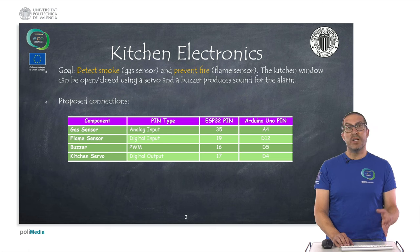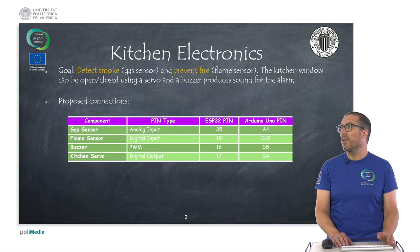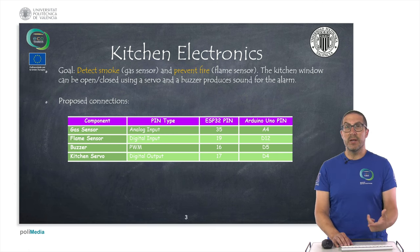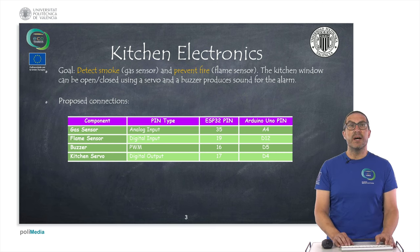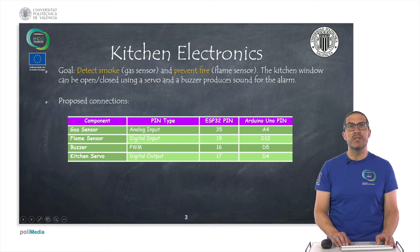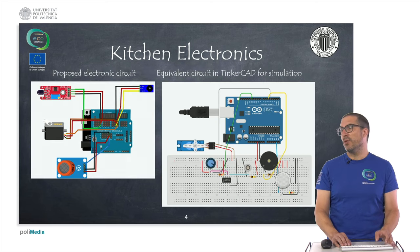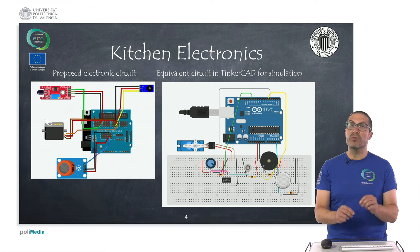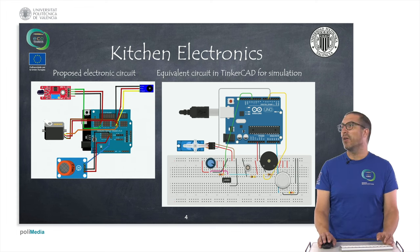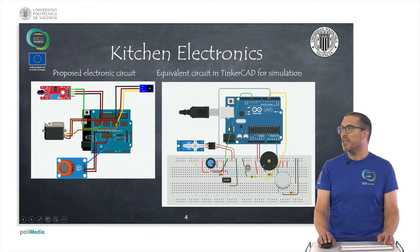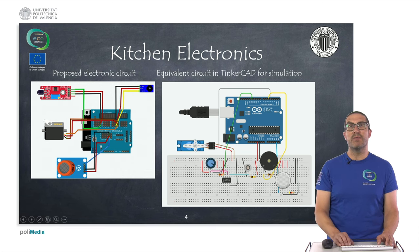The kitchen's aim is to detect smoke using the gas sensor and to prevent fire using the flame sensor. We can use a servo to open and close the window and a buzzer to produce an alarm to warn the user. These are the proposed connections of each component and the corresponding Arduino pins. The diagram on the left is a Fritzing diagram to identify the elements, and on the right is the equivalent Tinkercad circuit used for simulations.